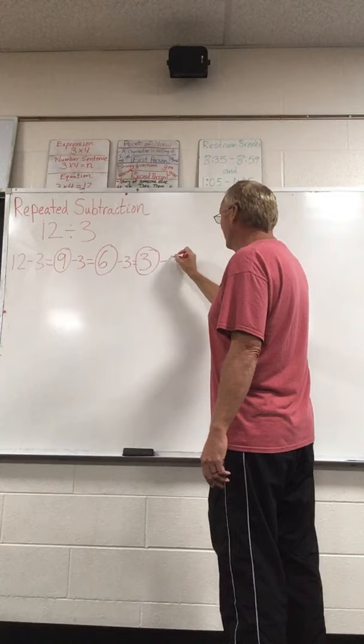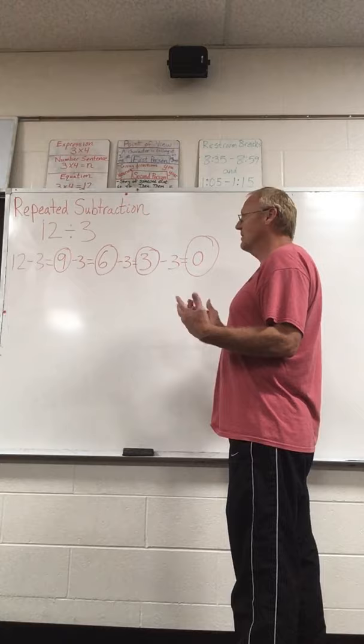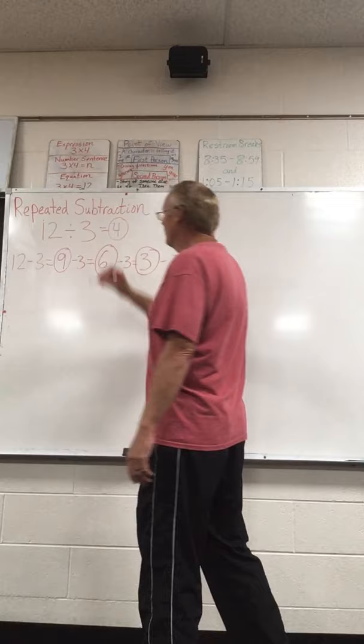We're still not to 0, so we subtract 3 again, and that's going to give you 0. To figure out your answer, you count how many answers you got: 1, 2, 3, 4. Therefore, 12 divided by 3 gives you a quotient of 4.